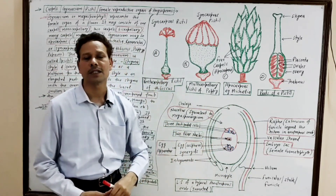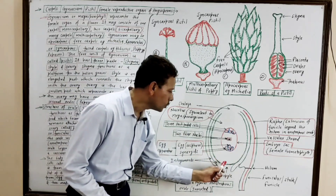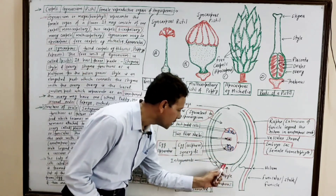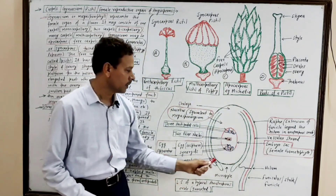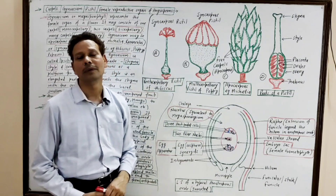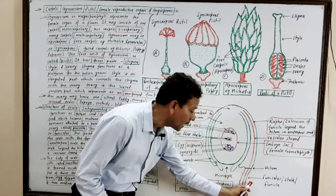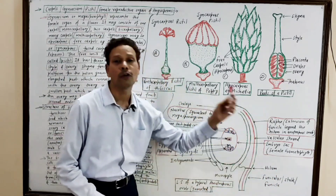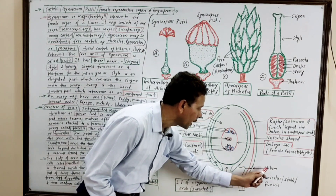This ovule is an integmented megasporangium. The integuments consist of one or two layers — the ovule generally consists of two coats, the two integuments. Between these two integument coats an aperture is present, and this aperture or pore is the micropyle. Through this micropyle the pollen tube enters into the embryo sac. This main body of the ovule remains connected by a small stalk-like structure called the funiculus. The point of connection between the funiculus and the ovule body is the hilum.